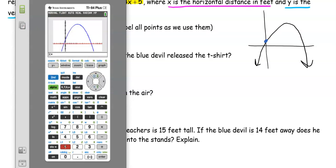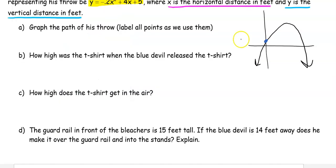I want the y-intercept, that's when x is zero. So (0, 5). How high was the t-shirt when the Blue Devil released it? It's not on the ground because it's in his hand. When it says how high, that means we're looking at the y value of the coordinate. That's 5 feet. When he lets go of the t-shirt as he goes to throw it, it's 5 feet above the ground.